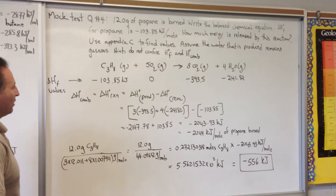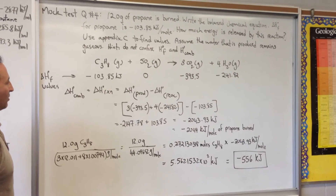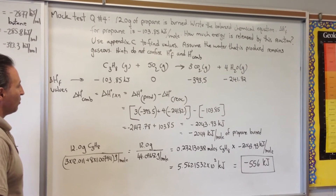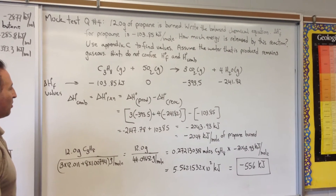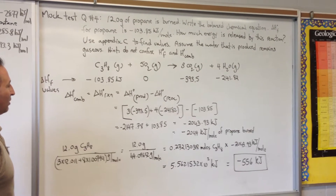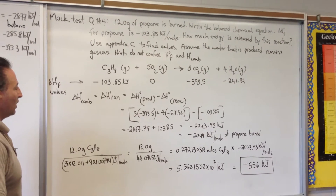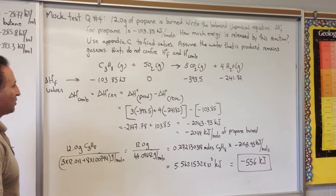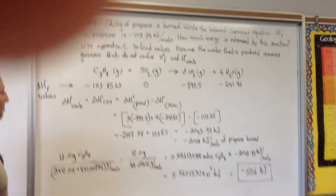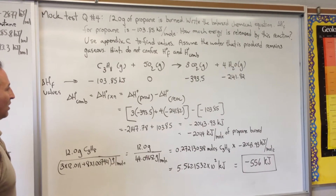12 grams of propane is burned. Write the balanced chemical equation. We are told that the heat of formation for propane is negative 103.85 kilojoules per mole of propane formed. How much energy is released by this reaction? Use Appendix C from your textbook to find the values.